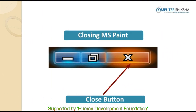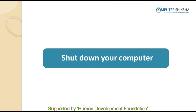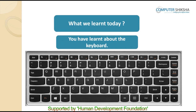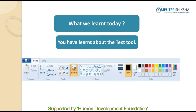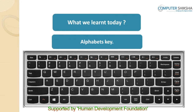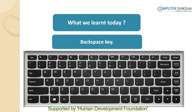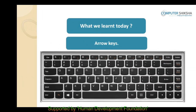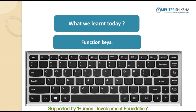Today's class ends here. All of you now properly close your file and shut down your systems. In today's class, you have learned about the keyboard, about the text tool, and how with the help of the text tool we can write in our paint file. You have also learned about some important keys on the keyboard: alphabet keys, number keys, enter, backspace, special keys, arrow keys, function keys, and the delete key. Thank you.